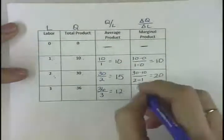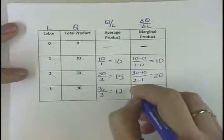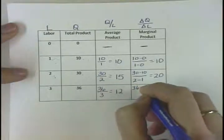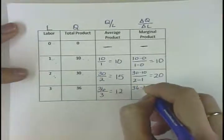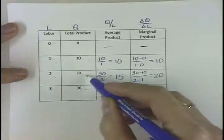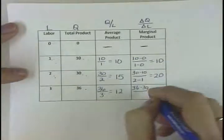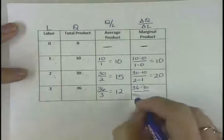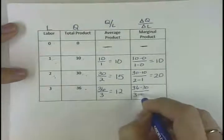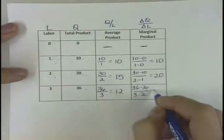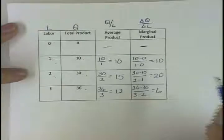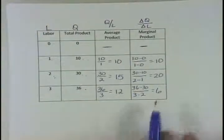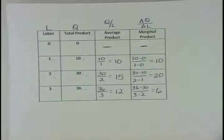Let's see what happens with the third unit of labor. We're going to take the change in total product — the change in quantity — which is 36 minus 30, and divide by the change in labor, which is 3 minus 2. So we have 6 divided by 1, which is 6. This third unit of labor added 6 units to my production.